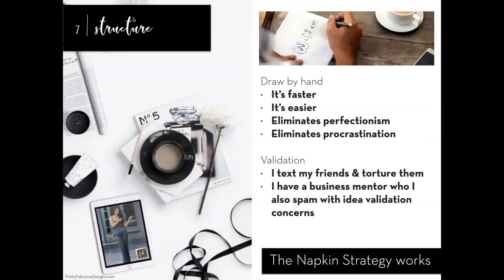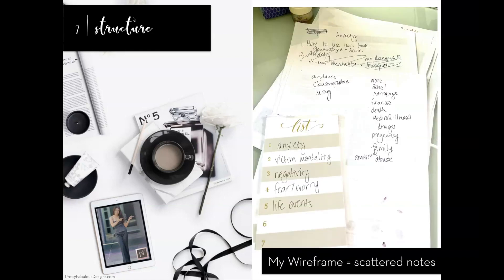For structure, I create the wireframe. This is always easier for me to do by hand — it's faster, it's easier, and if I try to do it on a computer I tend to be a perfectionist and end up procrastinating. If I'm unsure about what to put on a page, I send my friends a ton of emails and texts. I also have a business mentor who I pay, and I also spam them with questions. That's why I say the napkin strategy is always best — this is what mine actually looks like: all my notes on my desk, a total mess.